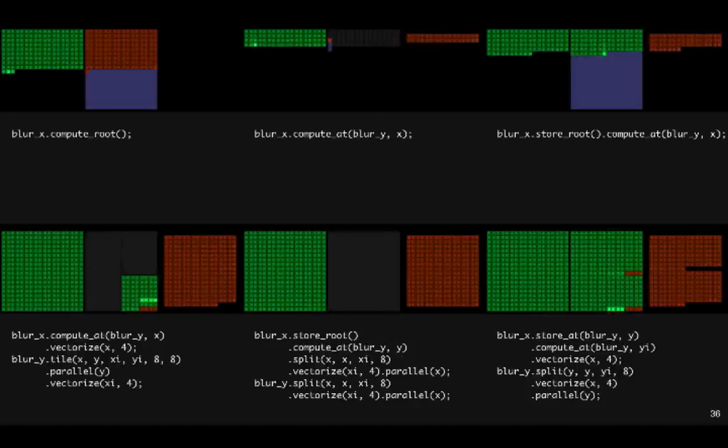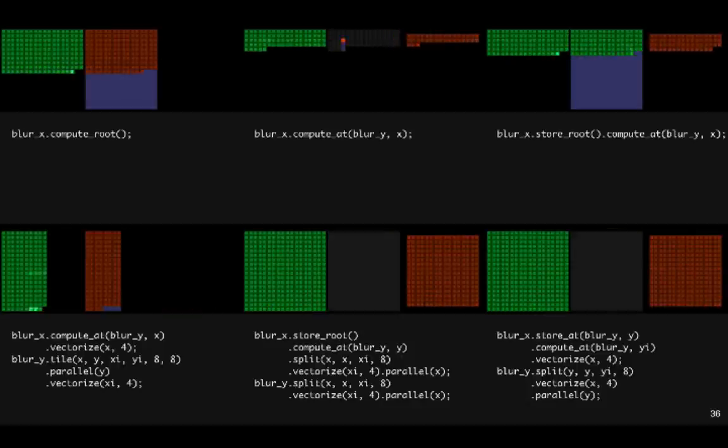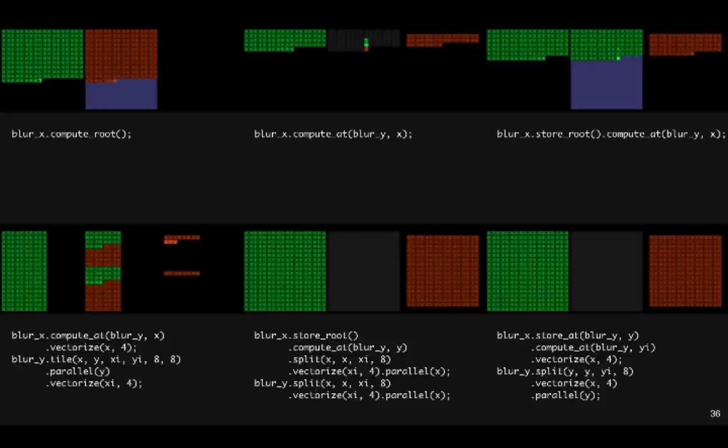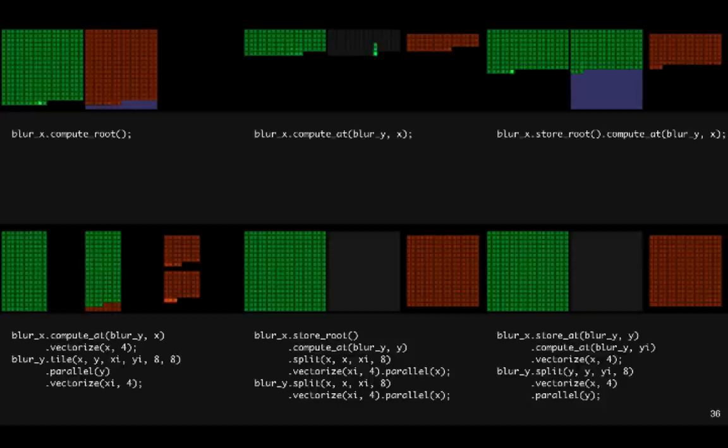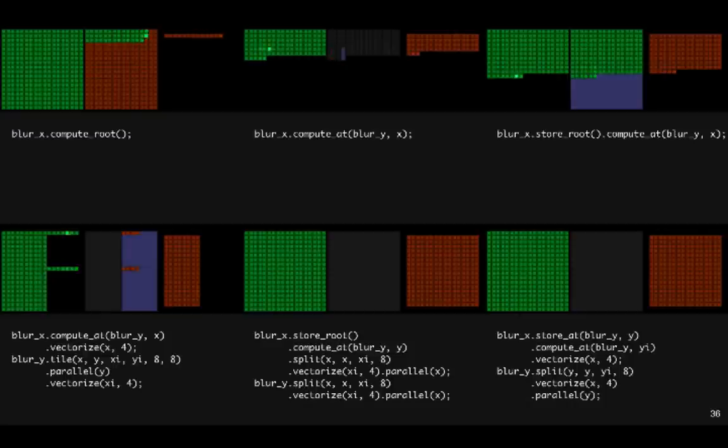So you might think that Halide is fast because we generate good parallel vector code. That's true, that's necessary, but it's not sufficient. The real reason we're fast is because we make it easy for a programmer to explore this choice space. If you sit down, think really hard about the problem, and write code once, even if you're an expert, you're probably not going to produce fast code. You need to try things, you need to iterate, and Halide makes it faster to iterate.